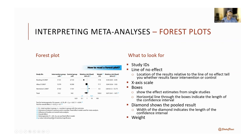Number one: on the left, the first thing you see is the study IDs — the name of the author and the year. If there's more than one study from an author in a year, you can see them labeled A or B. So you have the study IDs and the year they were published — that's what you use to identify the study. Then you can see the number of people in the study.